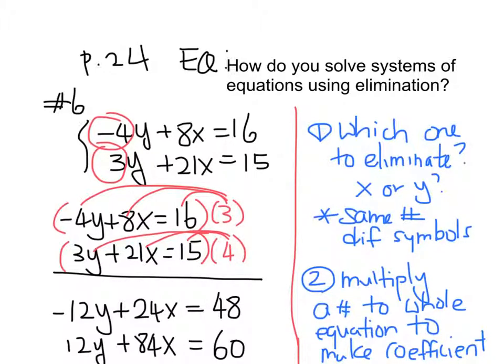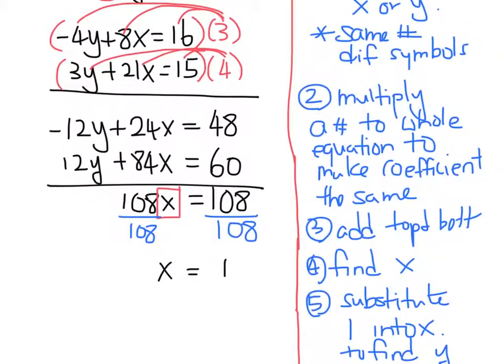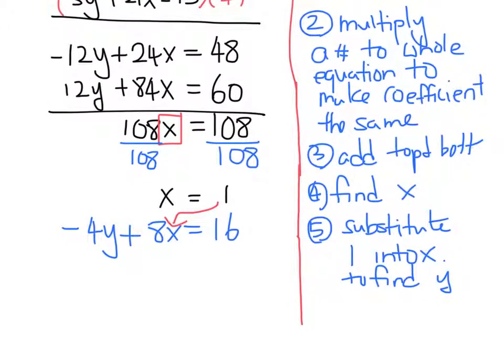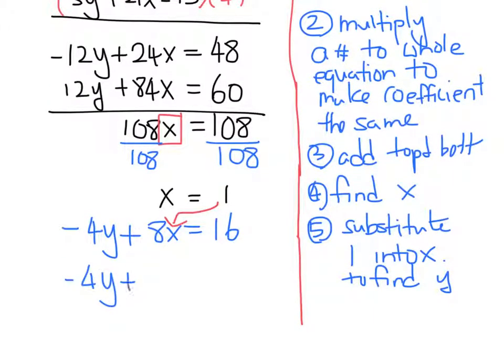So there's nothing wrong with the bottom one. I just like the top one. So I'm going to go ahead and plug it into that one. Negative 4y plus 8x equals 16. And instead of x, step number 5 says I'm going to plug in 1. So I'm going to plug in 1 into the x. So now let's keep going. Negative 4y plus 8 times 1. And that equals 16. 8 times 1 is 8. And so now it's going to be negative 4y plus 8. And that equals 16.